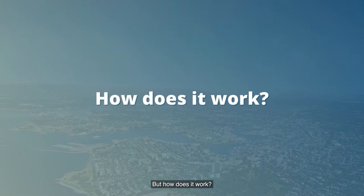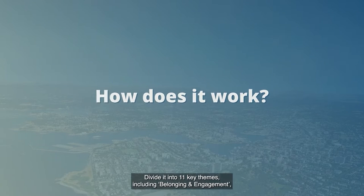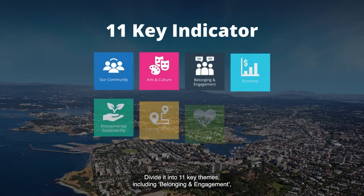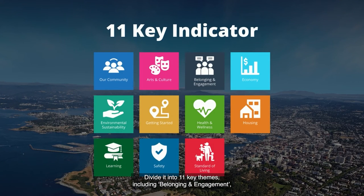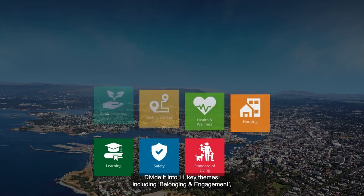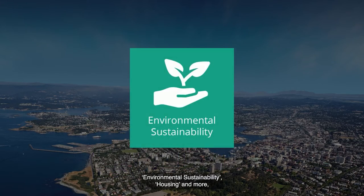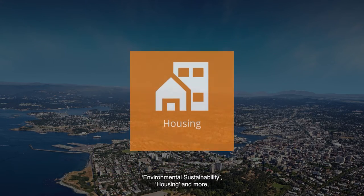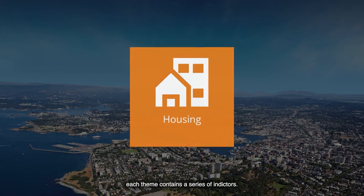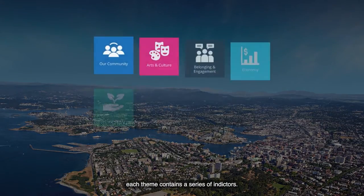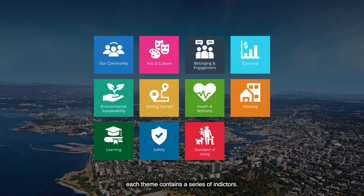But how does it work? It is divided into 11 key themes, including belonging and engagement, environmental sustainability, housing, and more. Each theme contains a series of indicators.